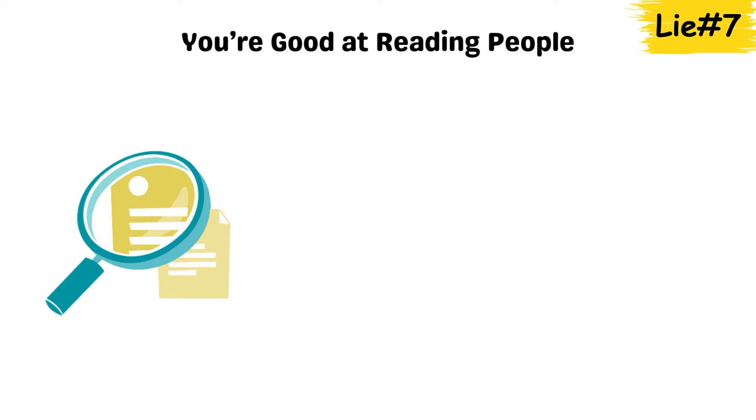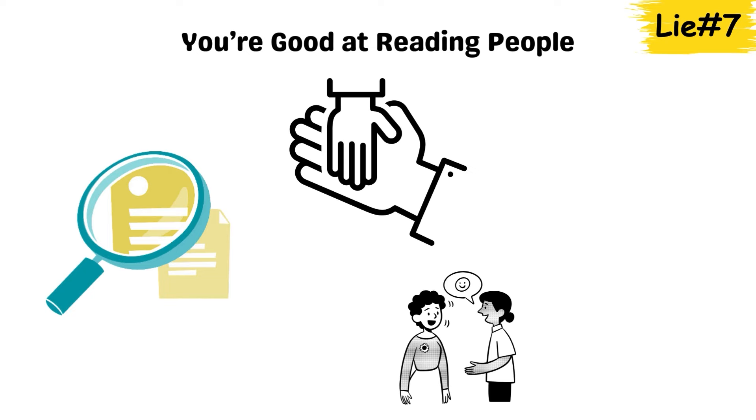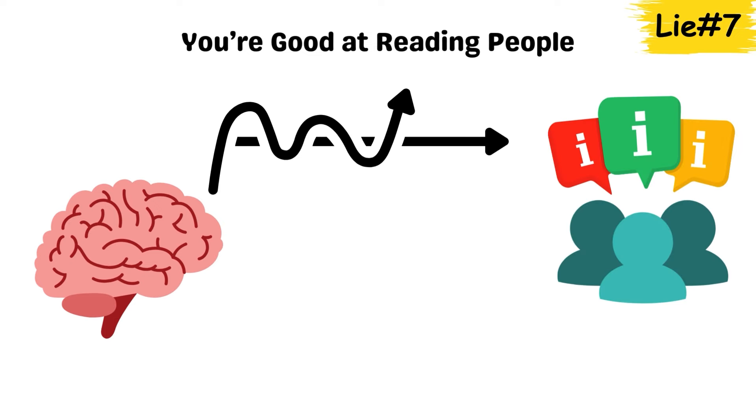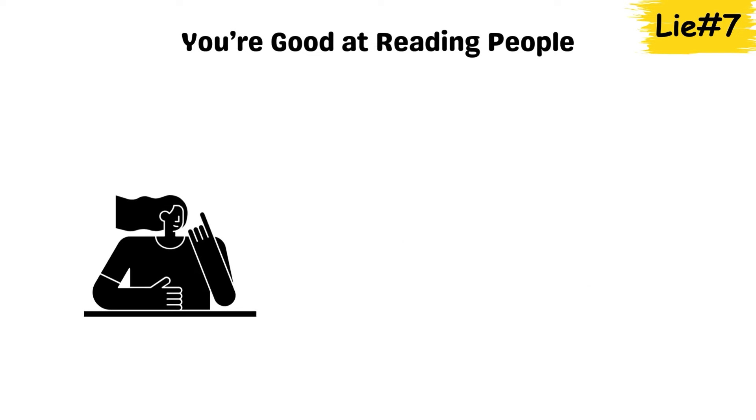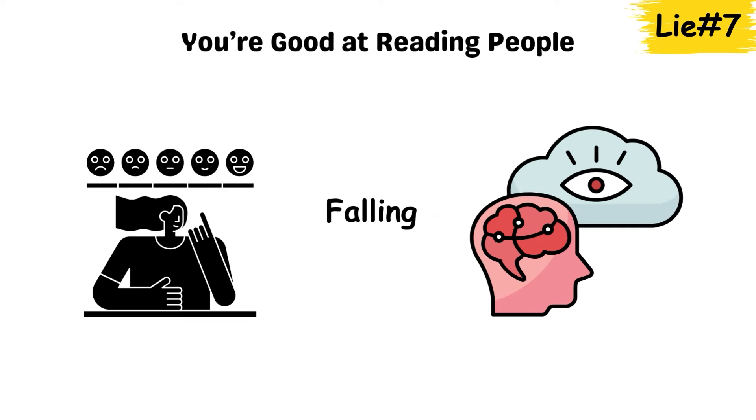Studies show that we over-rely on surface cues and tend to misjudge intentions because our brains simplify social information to make quick decisions. So, while it feels like you're accurately reading someone, you're often just falling for your brain's quick assumptions.